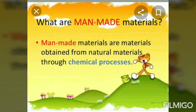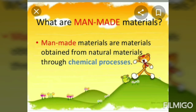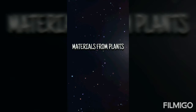Dear students, man-made materials are materials obtained from natural materials through a chemical process. For example, wood is a natural material that can be made into paper. Paper is a man-made material.